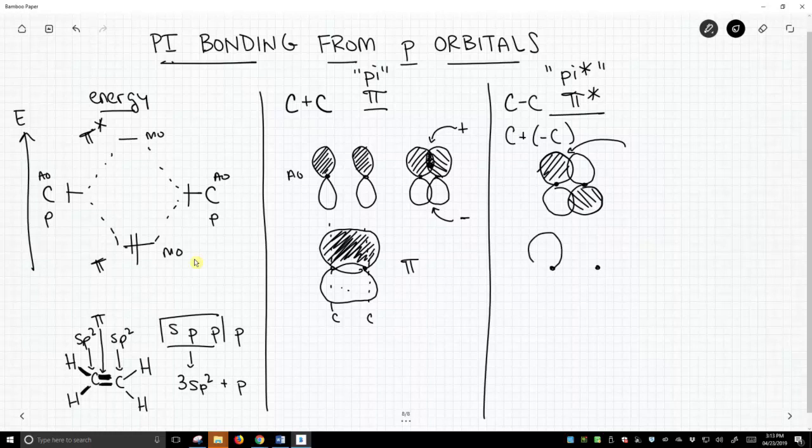So what does this look like? I mean, I'm getting something kind of like this. I know the silence in videos is always very compelling. So in between where we get cancellation, we get a node. And this is a pictorial representation of what the pi star orbital looks like.